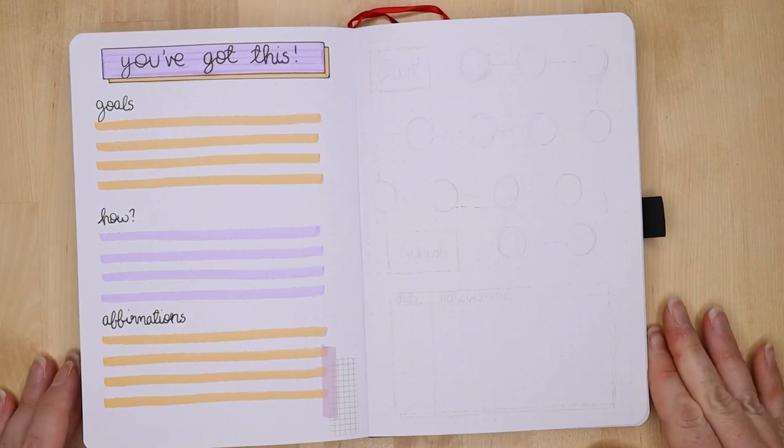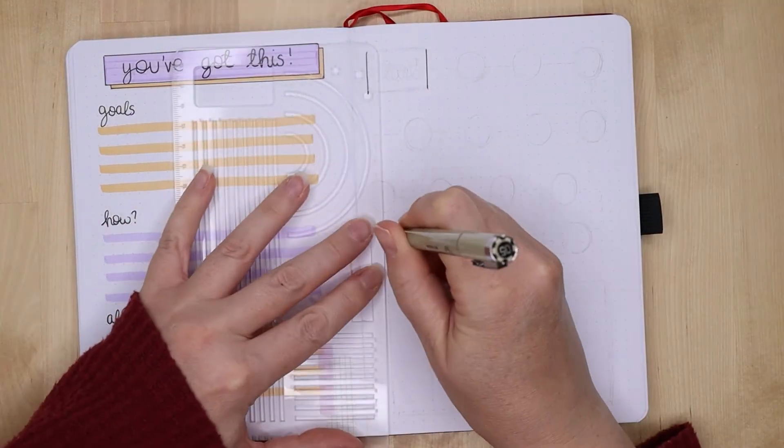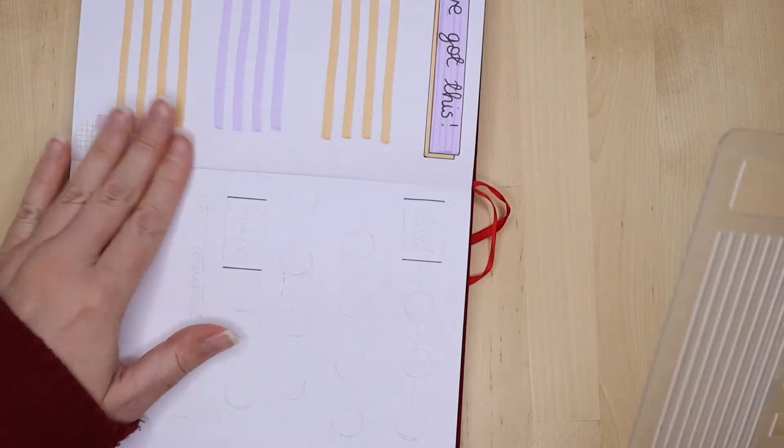But on the how, that's where I keep holding myself accountable. Am I sticking to a healthy eating plan? Am I drinking enough water? What about exercise? What am I committing to?